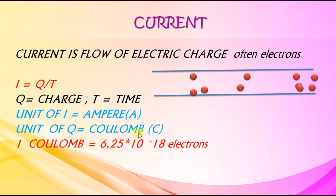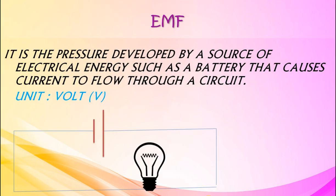One coulomb equals 6.28 times 10 raised to 18 electrons. EMF is the pressure developed by a source of electrical energy, such as a battery, that causes current to flow through a circuit. Unit is volt.